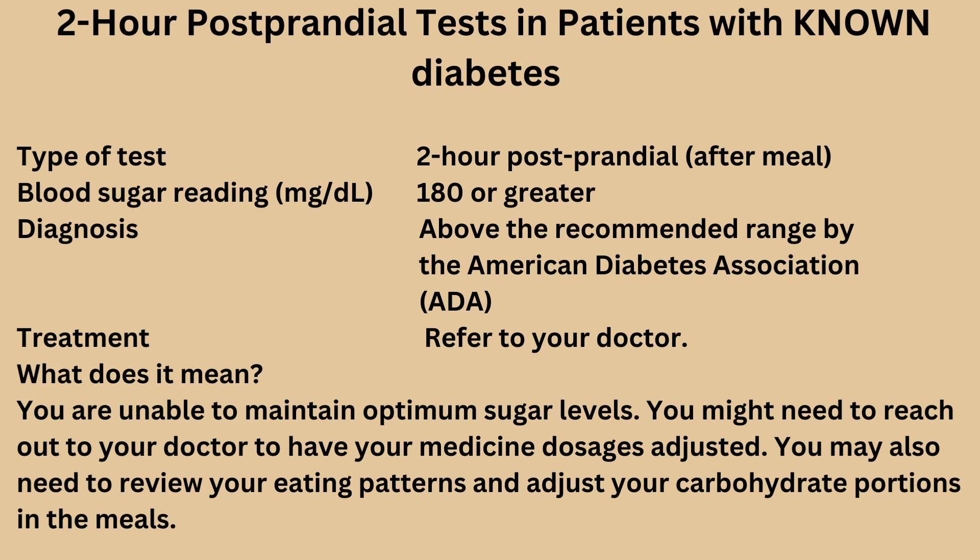If you are a patient with known diabetes and you took a two-hour postprandial test and got a blood sugar reading of 180 milligrams per deciliter or greater, then you are above the range recommended by the ADA. This means you are unable to maintain optimum sugar levels. You might need to reach out to your doctor to have your medicine dosages adjusted and review your eating patterns and carbohydrate portions.